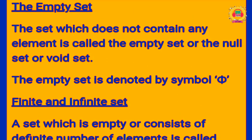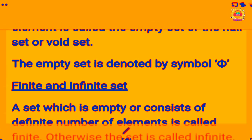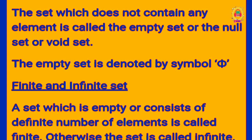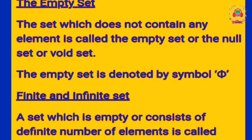An empty set is the set which does not contain any element — also called a null set. An empty set is denoted by Φ (phi). For example, the number of boy students in a girls' hostel — like in St. Mary's school — this is an example of an empty set.